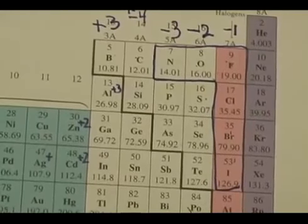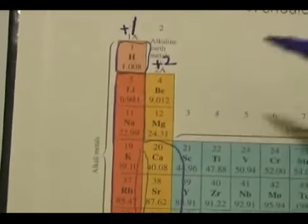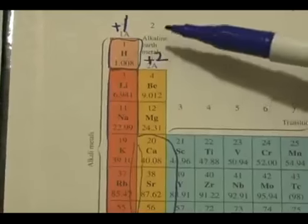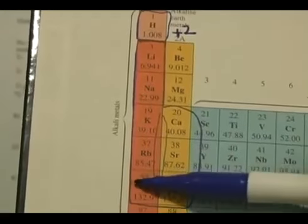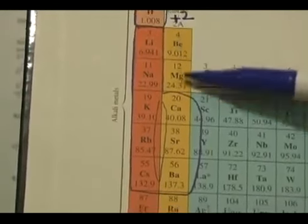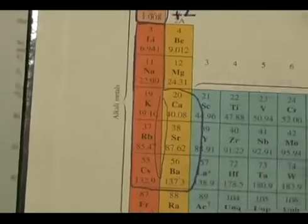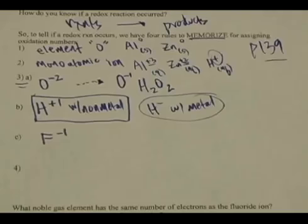Metals in groups 1 and 2 almost always follow predictable rules: lithium, sodium, potassium, cesium are positive one, and anything in group two is always positive two as well. It's kind of an unwritten rule — you already know that.